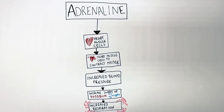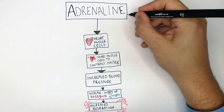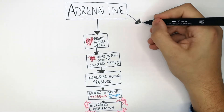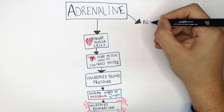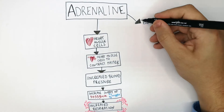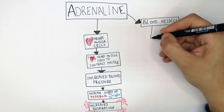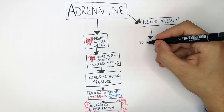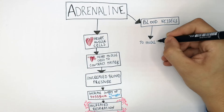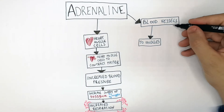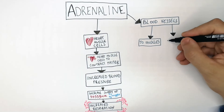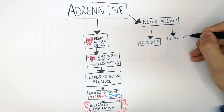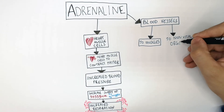Adrenaline is also transported to your blood vessels. Your blood vessels receive adrenaline — the blood vessels to the muscles are affected, and so are the blood vessels to the non-vital organs.